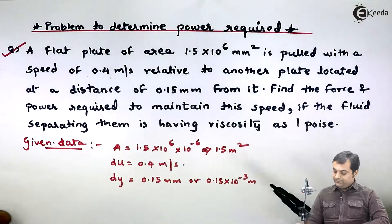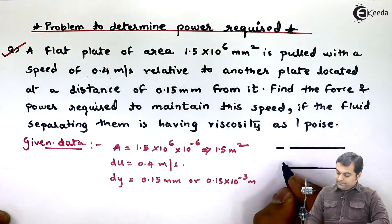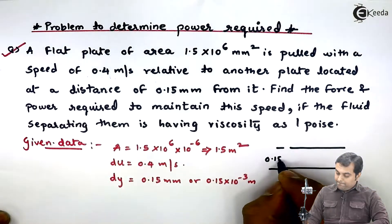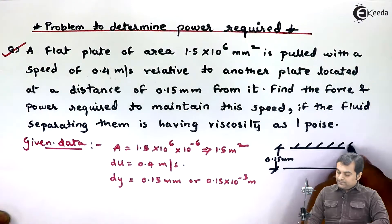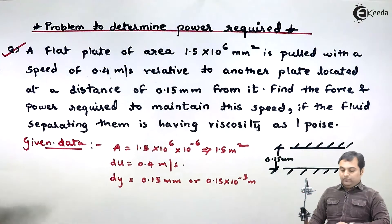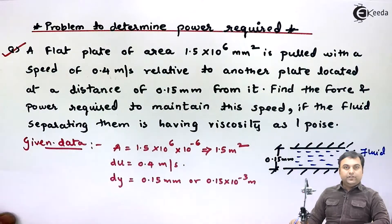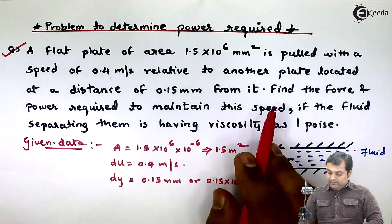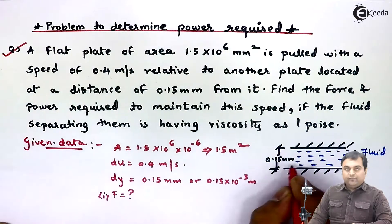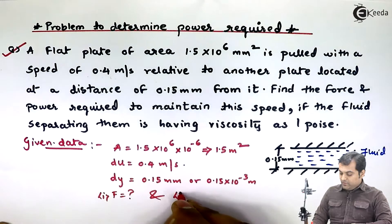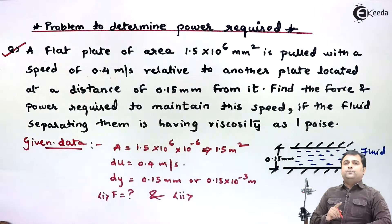We have two plates with a distance of 0.15 mm between them, and between these two plates the fluid is flowing. We have to find the force required so that the fluid will flow, and how much power is required so that the fluid flows.